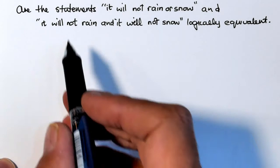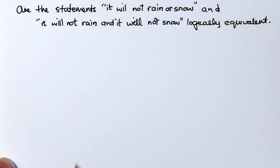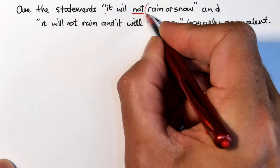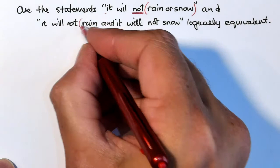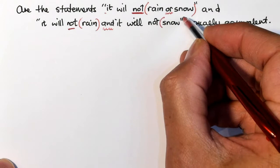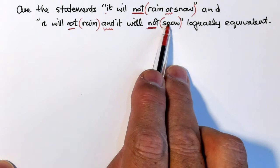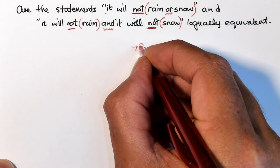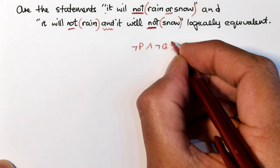It is saying we want to know whether it will not rain or snow and it will not rain and, remember the or is important there, and it will not snow. So there's a not rain and a not snow in this argument. So how are we going to write that? Not rain and not snow is the one thing that we want to look at.